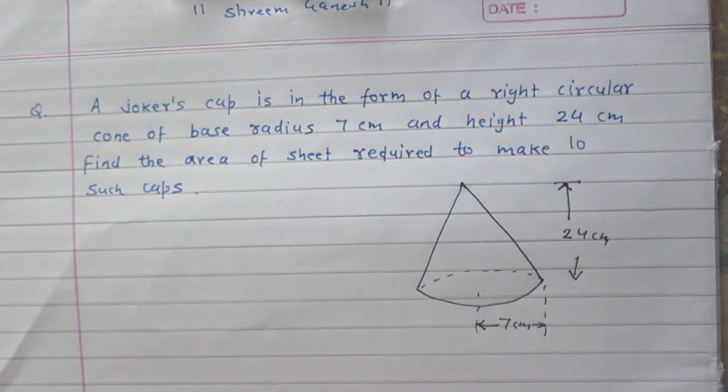A joker's cap is in the form of a right circular cone of base radius 7 cm and height 24 cm. Find the area of sheet required to make 10 such caps.